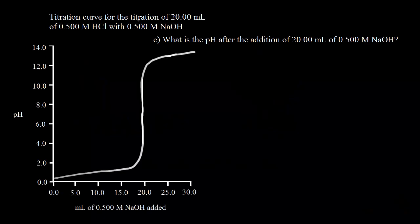We've been looking at the titration curve — the titration of a strong acid, HCl, with a strong base, NaOH. In the previous video, we already found the pH at two points on our titration curve: the pH before we added any base, and the pH after we added 10 mL of base. Those were parts A and B. Now we're on part C.